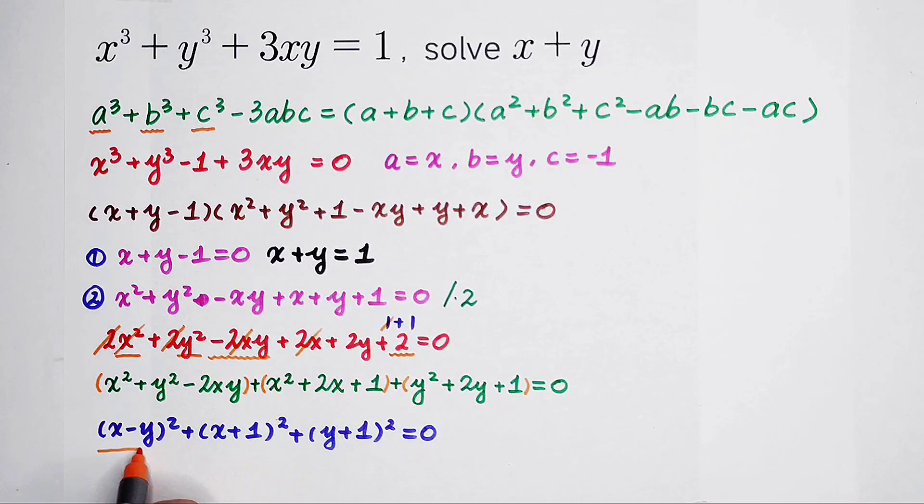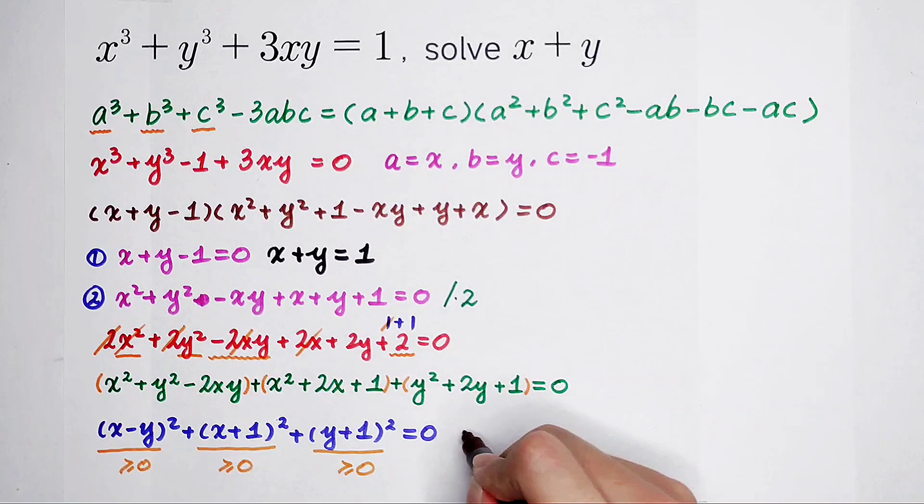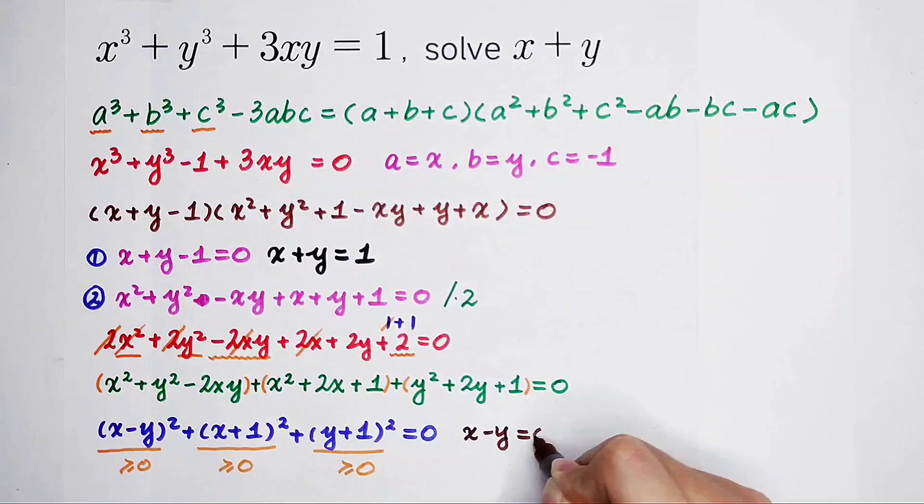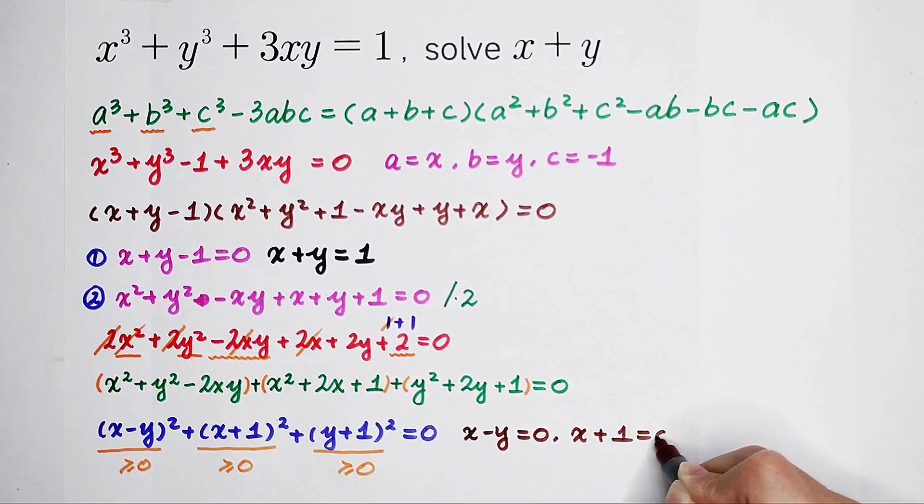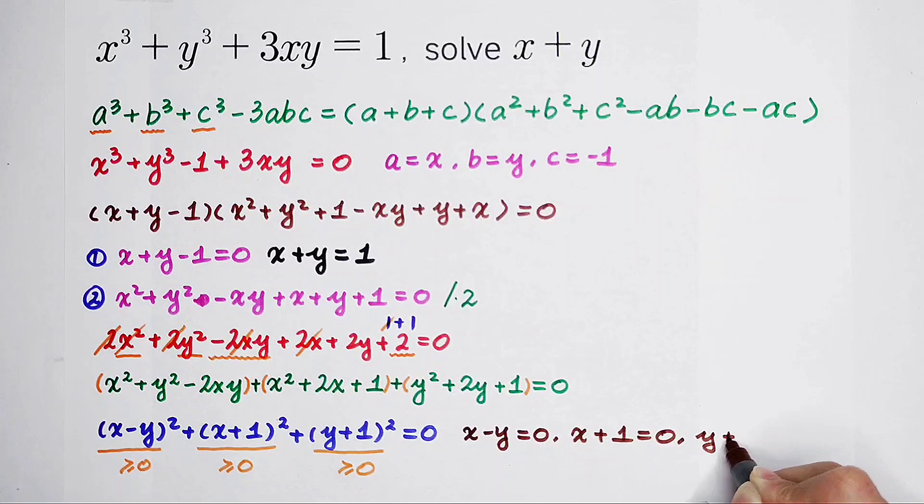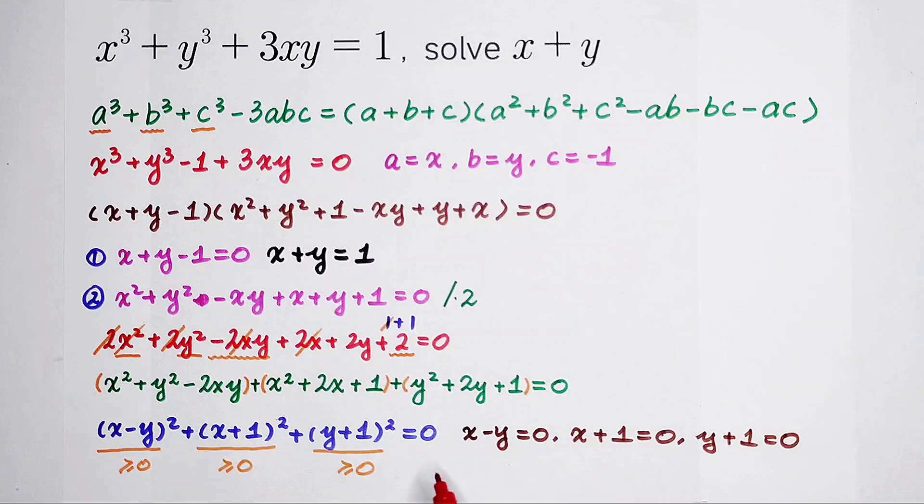Because these three terms are all non-negative, but the sum of them is 0. So I can get (x minus y) equals 0, (x plus 1) equals 0, and (y plus 1) also equals 0. If I get this, then I can solve the value of x and y, and also x plus y.